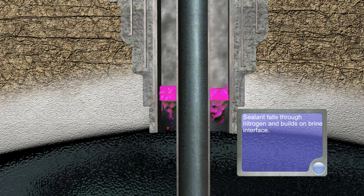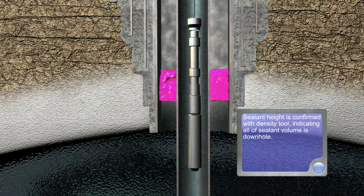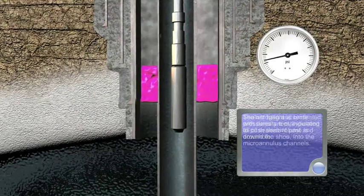Sealant falls through nitrogen and builds on brine interface. Sealant height is confirmed with density tool, indicating all of sealant volume is down hole.